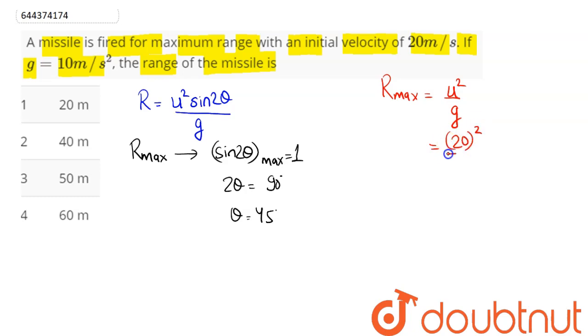So this comes as 400 by 10, which is equal to 40 meters. Hence 40 meters means amongst the four options, option number two is the correct answer. So we can say option number two is our answer.